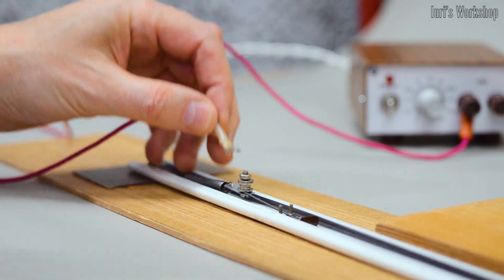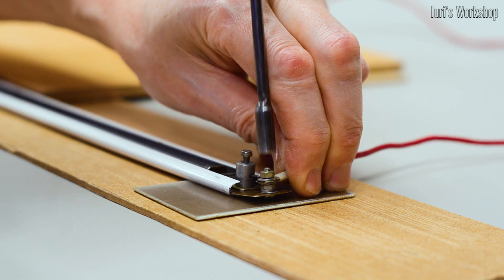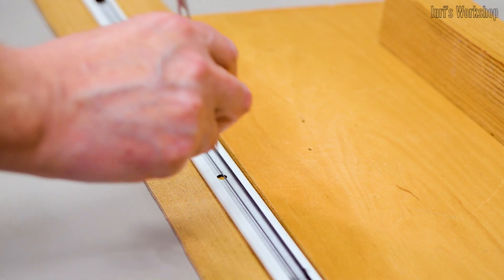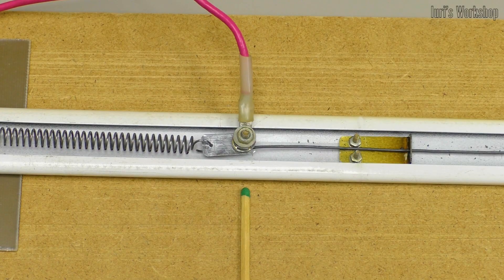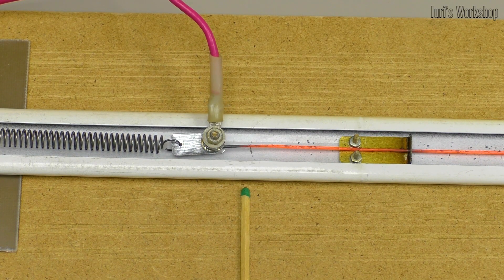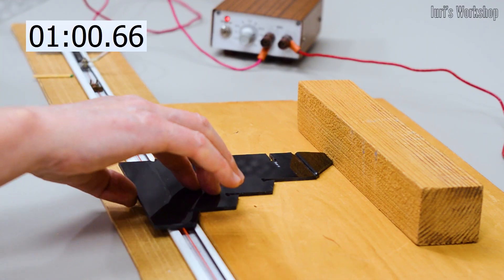And this is a very simple machine for bending plexiglass and other plastic sheets. Here too, a spring is used to compensate for the change in the length of the nichrome wire as a result of heating. It takes a lot of energy to heat thick sheet materials. Therefore, I used a nichrome wire with a diameter of 1 millimeter and passed a current of 20 amperes through it.